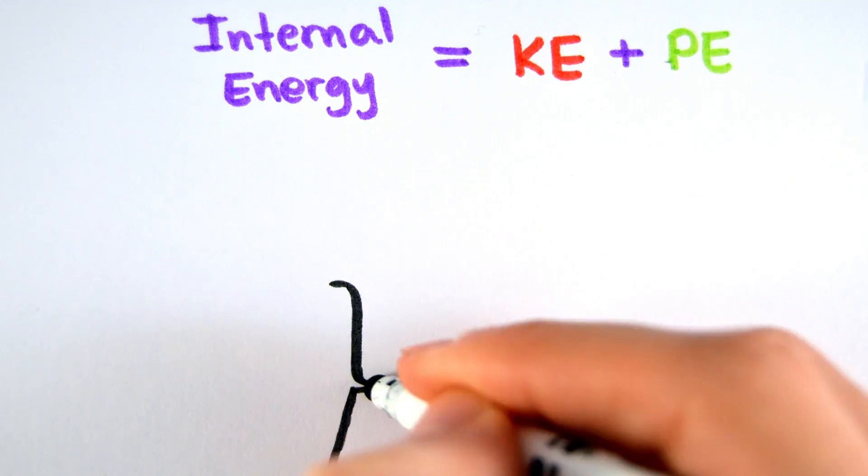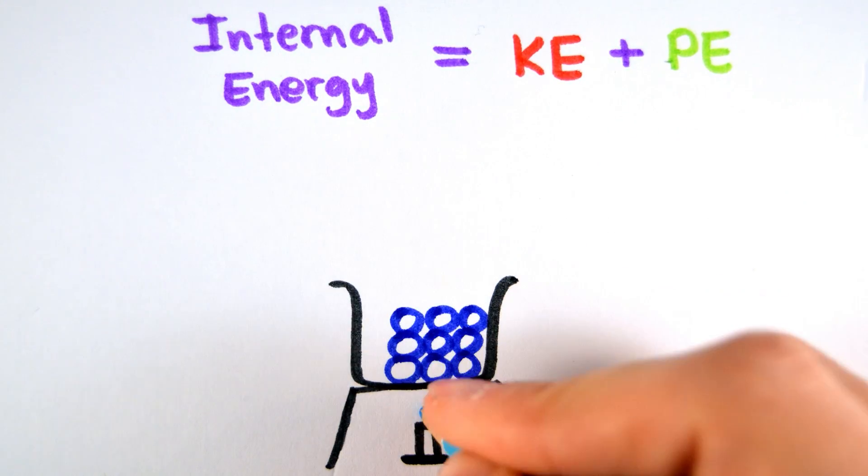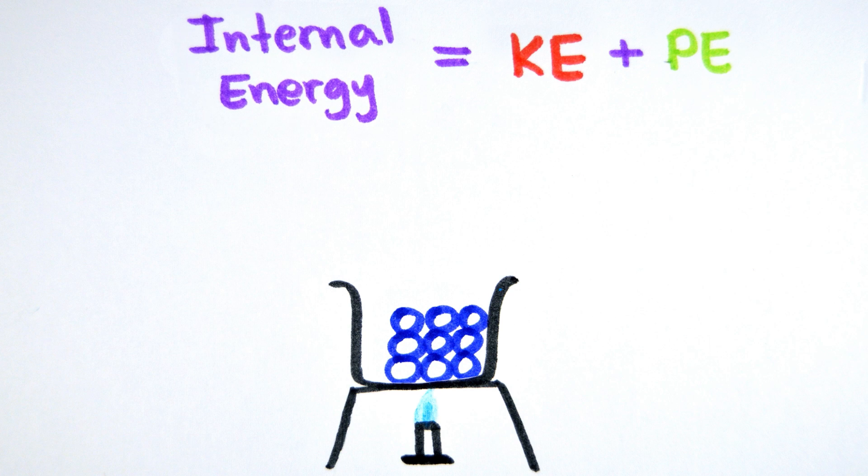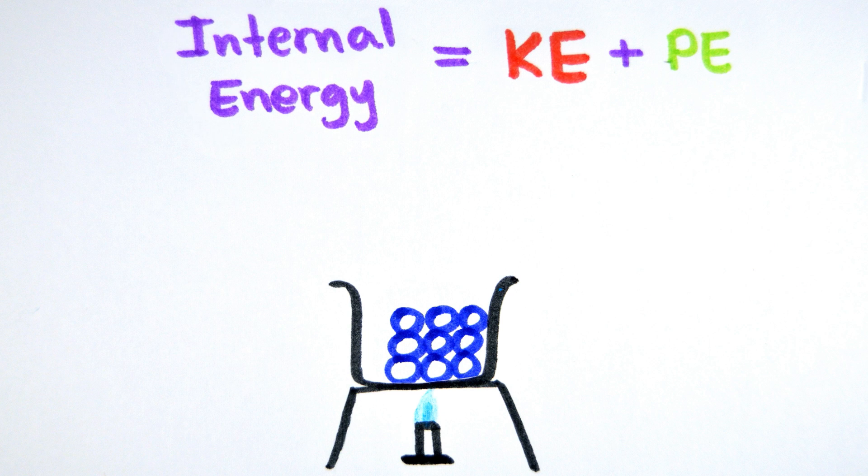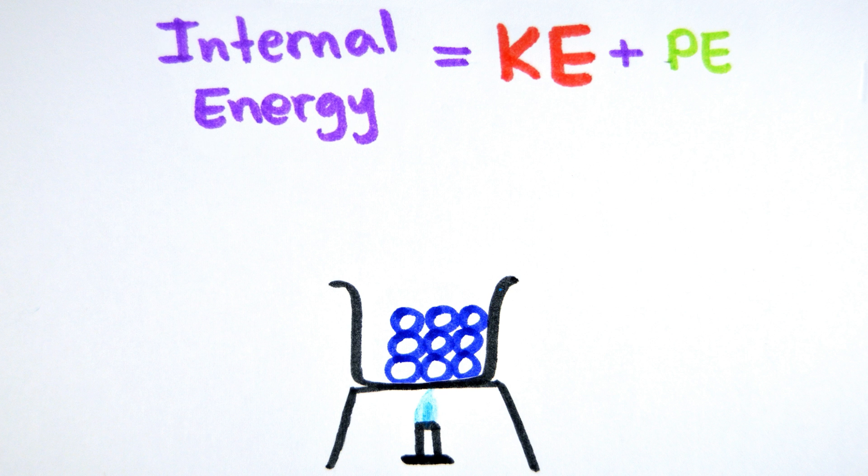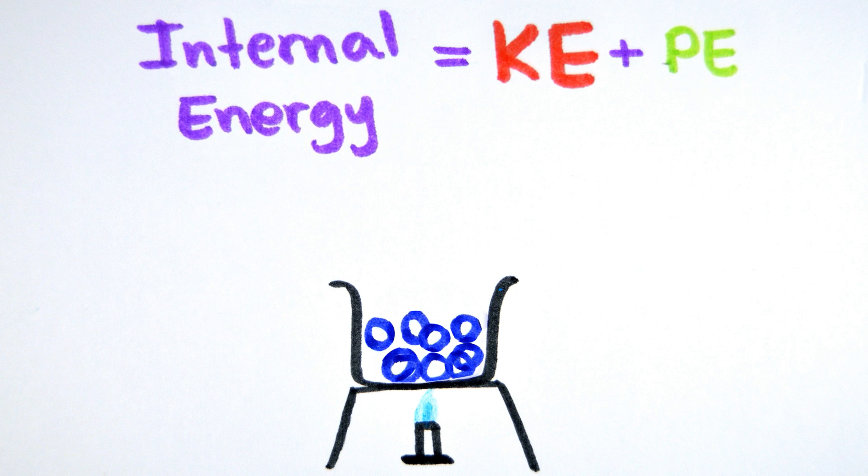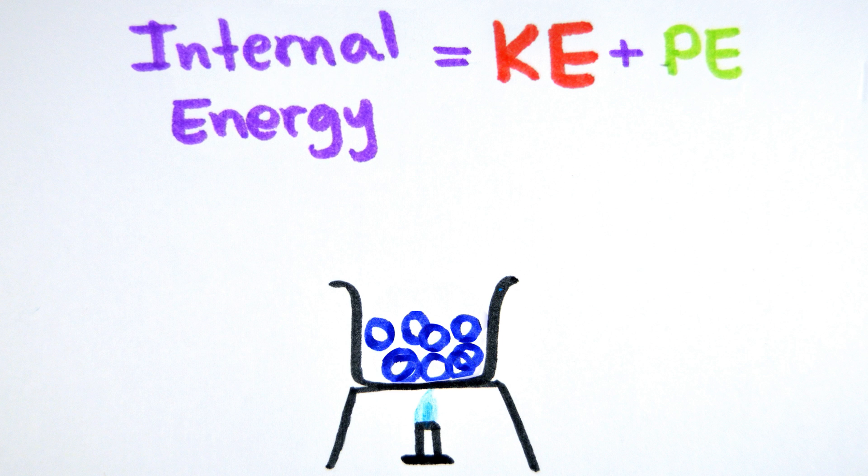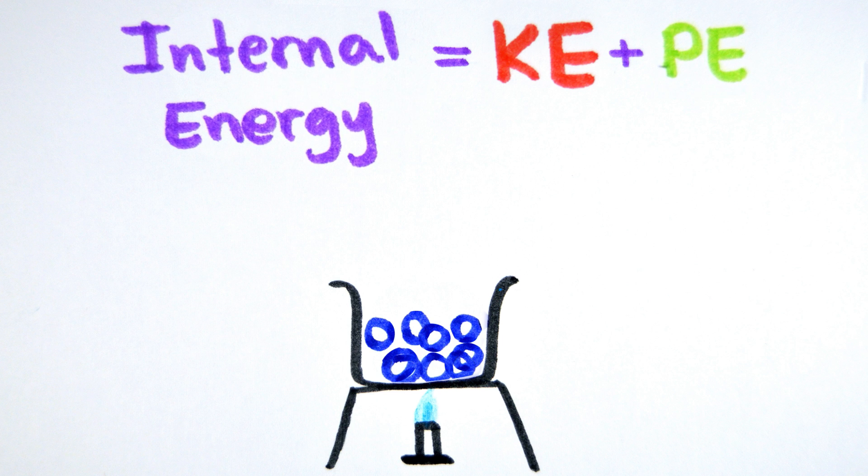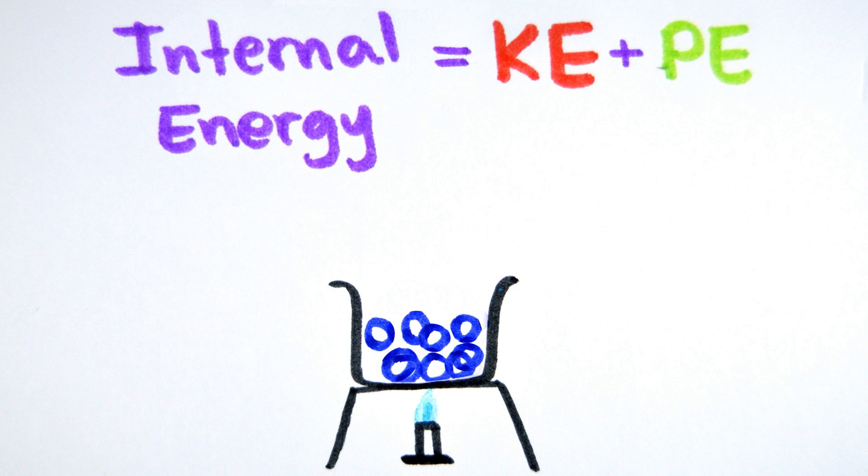When you heat a solid it raises the kinetic energy of the molecules, which as a result raises the internal energy of the substance. However, when you continue to heat the substance, it will reach a point where all of the energy supplied will go into melting the substance whilst keeping it at a constant temperature, so the potential energy of the particles will increase whilst the kinetic energy remains constant.